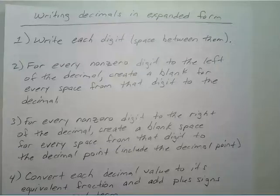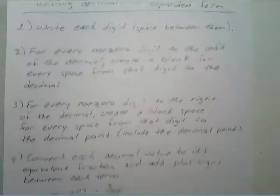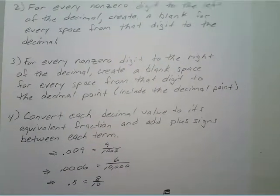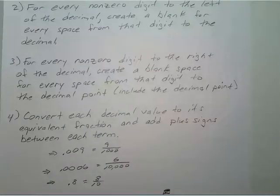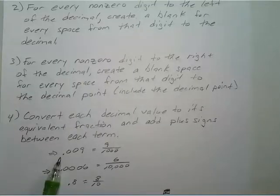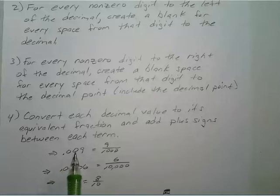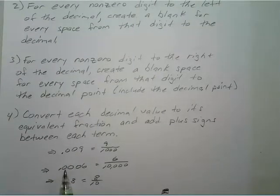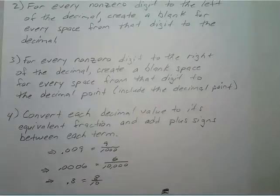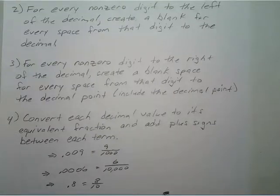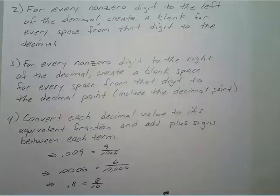For step three, for every non-zero digit to the right of the decimal, create a blank space for every space from that digit to the decimal and include the decimal point. The fourth step is to convert each decimal value to its equivalent fraction and add plus signs in between each term. For example, point zero zero nine converts to nine over one thousand — remember it's tenths, hundredths, thousandths. Point zero zero zero six would be six over ten thousand, and point eight would be eight tenths.